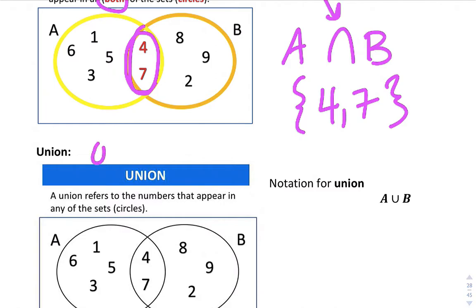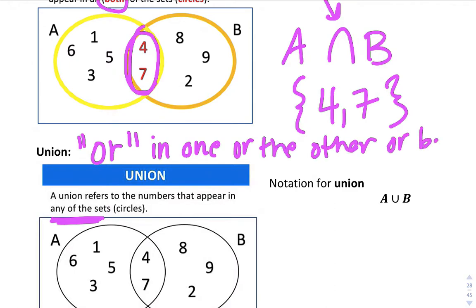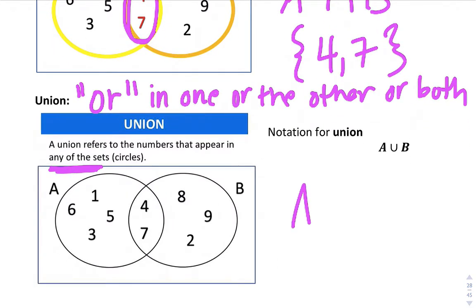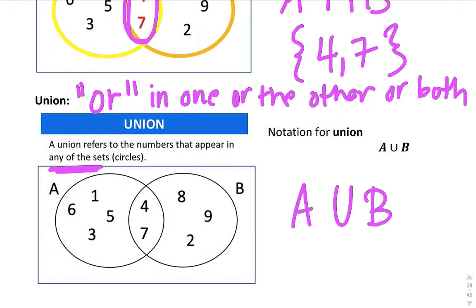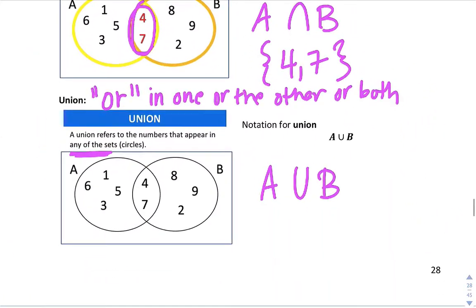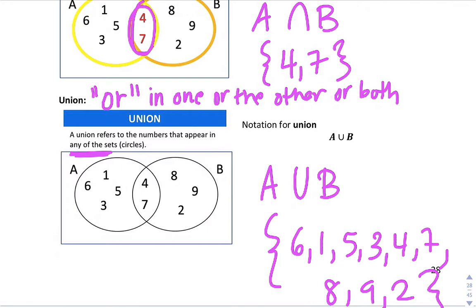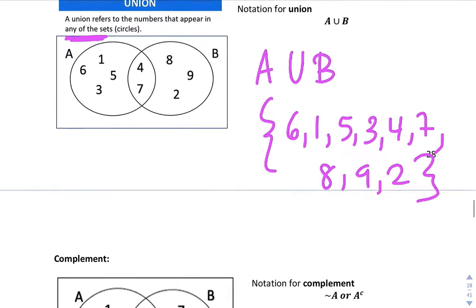All right. A UNION means OR. What's in one set or the other set or both? So it refers to the numbers that appear in any of the sets, any and all of the sets. So it's in one or the other or both. And here's the notation A or B. It's the upside-down U. So AND looks more like an A right here, whereas OR looks like a U. A or B. And again, we use the curly notation. And it's one or the other or both. It's all the numbers. So we got 6, 1, 5, 3, 4, 7, 8, 9, 2. All right. So all of these numbers are in A or B.